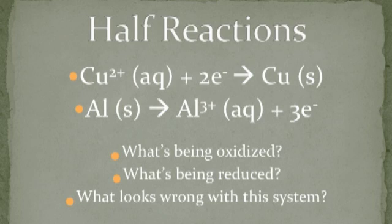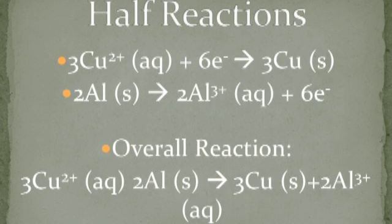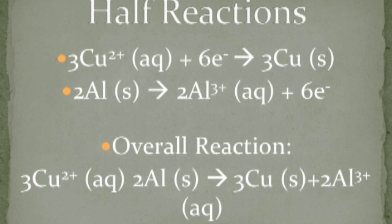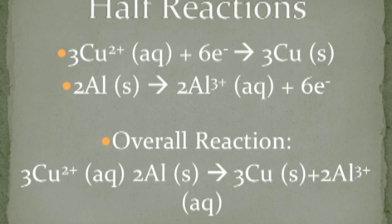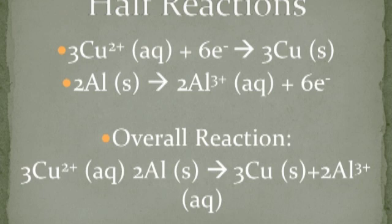So what do half reactions do? They don't really exist — they just show the transfer of electrons. They are intermediate steps in the overall reaction. Here we have Cu²⁺ + 2e⁻ → Cu(s), and Al(s) → Al³⁺ + 3e⁻. Aluminum is being oxidized; copper is being reduced. The problem is the electrons aren't equal, so you multiply the copper equation by 3 and the aluminum equation by 2 to get 6 electrons on each side. In the overall reaction, the electrons cancel out.